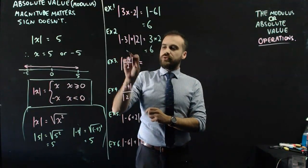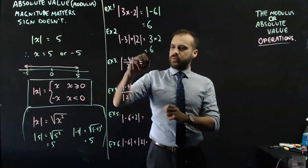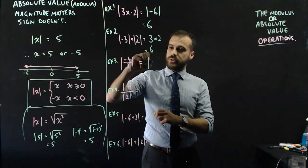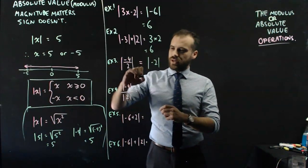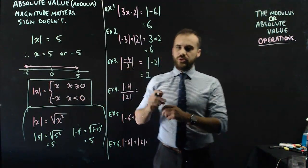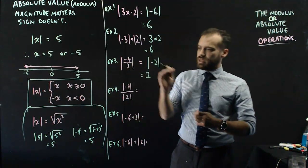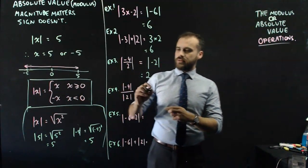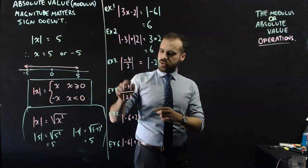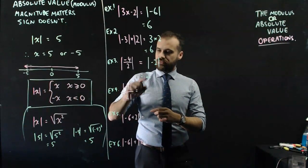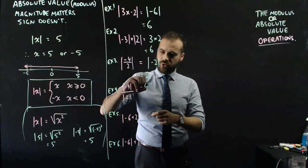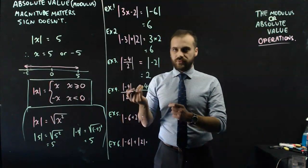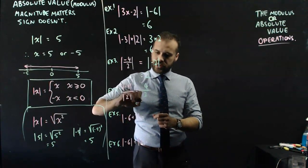The absolute value of negative 4 divided by 2 is equal to the absolute value of negative 2, and the absolute value of negative 2 is 2 — the sign goes away. The absolute value of negative 4 divided by the absolute value of negative 2: the absolute value of negative 4 is 4, the sign goes away, divided by the absolute value of 2, which is 2, giving an answer of 2.